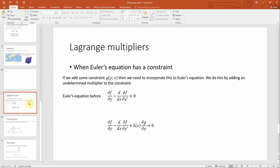For the lecture, we'll also be talking about Lagrange multipliers—that's if Euler's equation has some constraint. If we have a constraint given by general function g, which can depend on y and x, we need to incorporate this into Euler's equation by adding an undetermined multiplier to the constraint. Euler's equation becomes df by dy minus d by dx of df by dy prime plus lambda x times dg by dy equals zero. What we're trying to figure out is what this Lagrange multiplier lambda of x is.